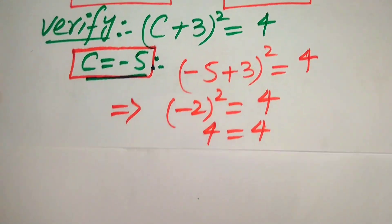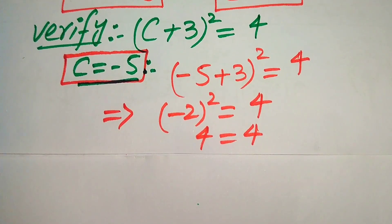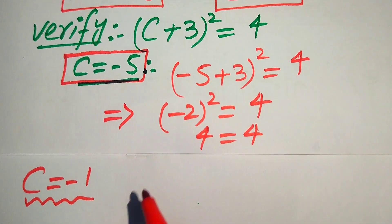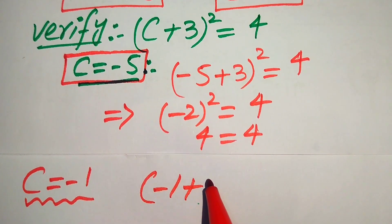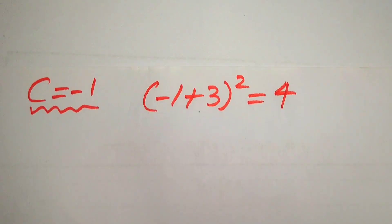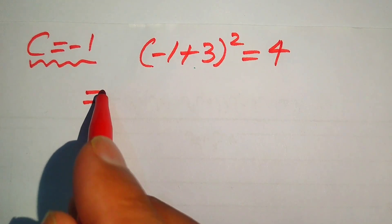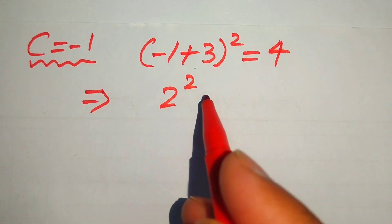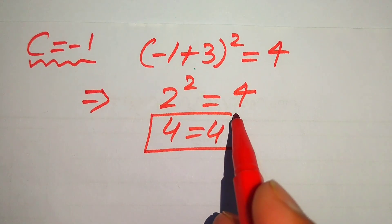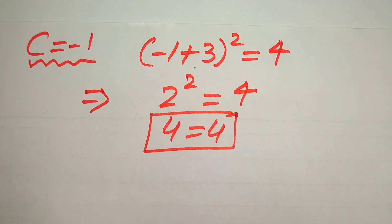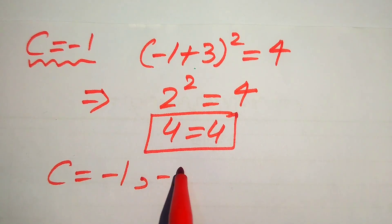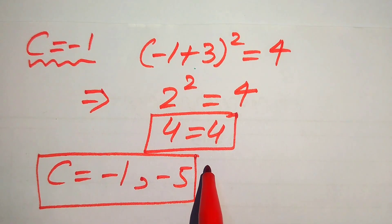Now we verify the second value, c = -1. Substituting into the left-hand side: (-1 + 3)² = (2)² = 4. We get 4 = 4, so c = -1 also satisfies the given equation. Therefore, both c = -1 and c = -5 are solutions of the given equation.